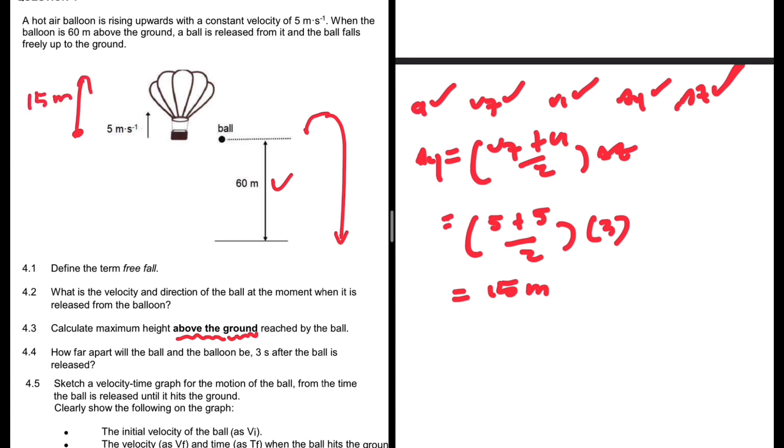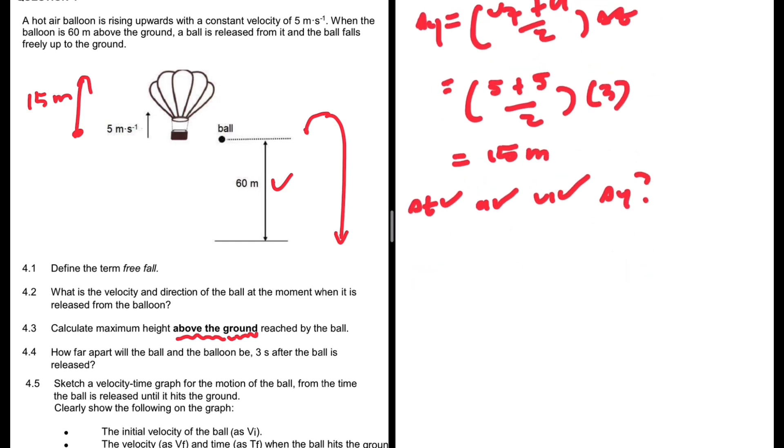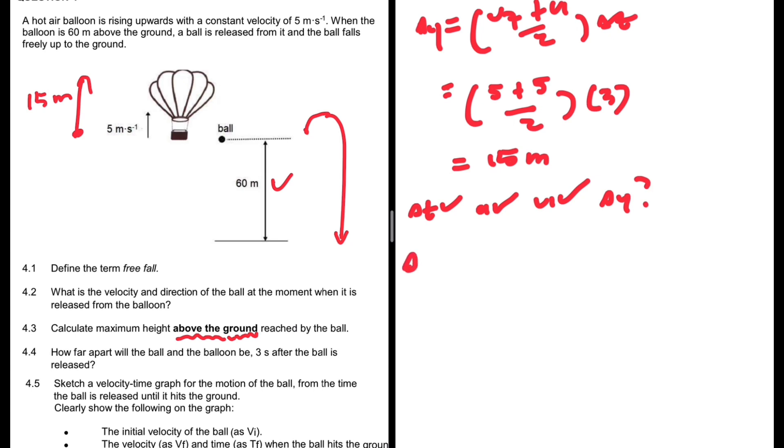We need to calculate where the ball is after 3 seconds. The information we have regarding the ball: we have delta t, we have acceleration, we have vi, and we're interested in delta y. It seems like delta y equals vi delta t plus half acceleration delta t squared will work.